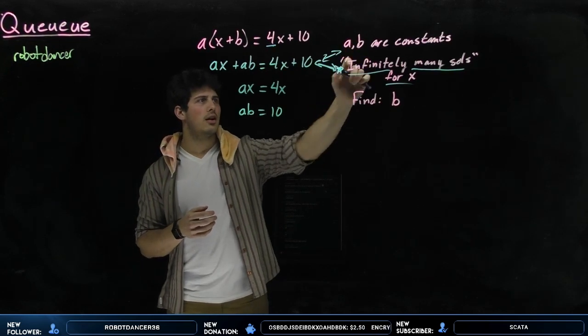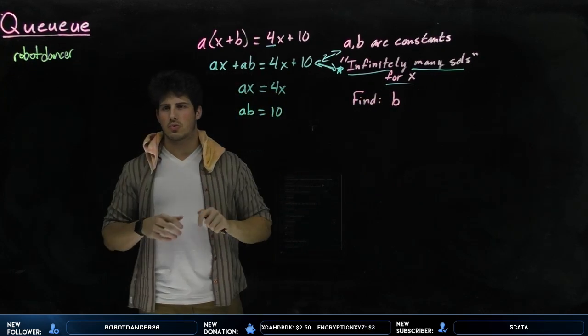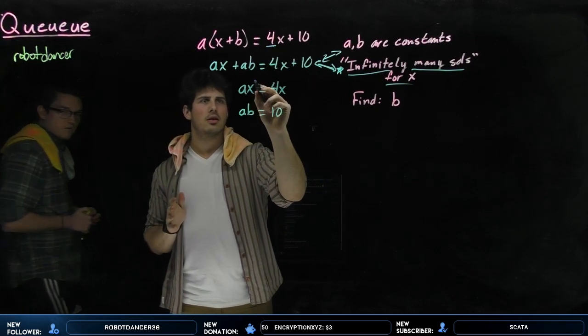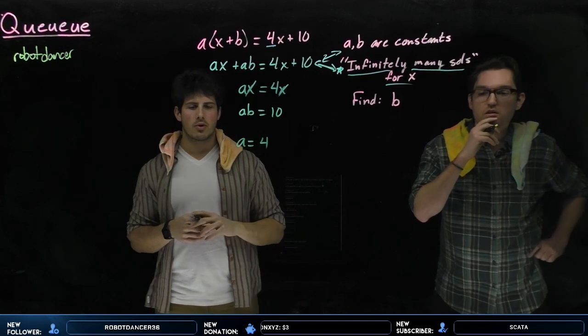And these two things right here, and mostly this right here, infinitely many solutions, allows us to know that this is true without a doubt. Meaning, a equals 4. You're right, robot dancer.